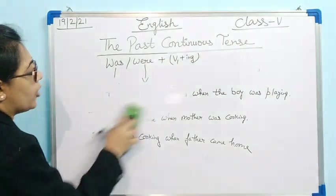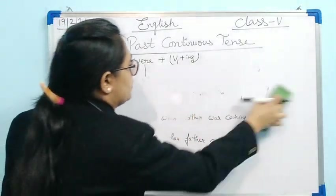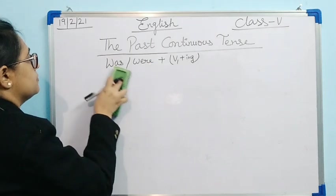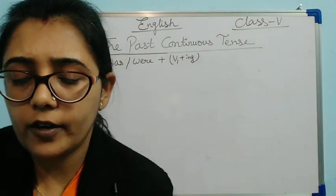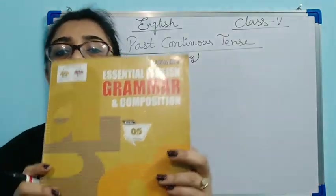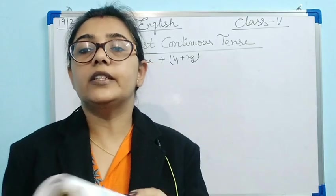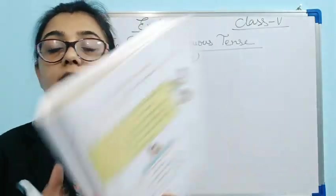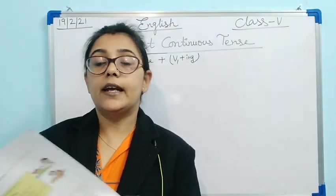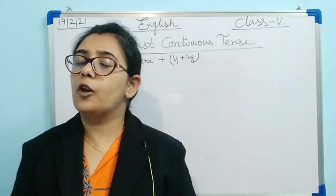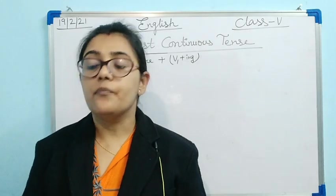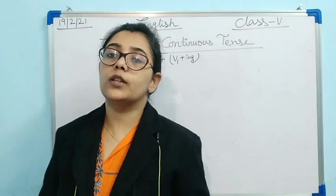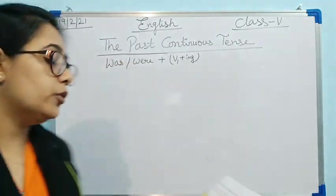The concept is clear and very simple — no need to worry. Just keep in mind: was or were + verb first form + -ing; use 'was' with a single person and 'were' with a plural person. Now let's move on to exercises. Take out your grammar book and open page number 71. This is the chapter on past continuous tense. Today we will solve exercises A, B, C, and D. I will discuss one or two examples of each, then send the remaining exercises to your WhatsApp.